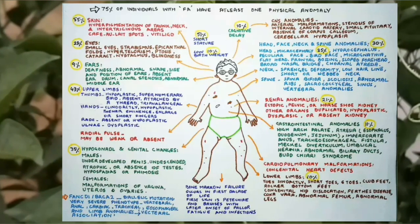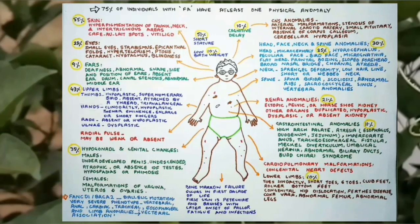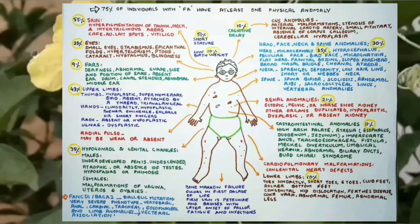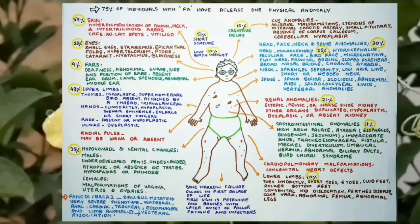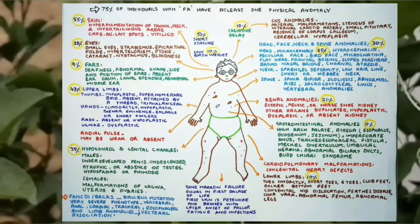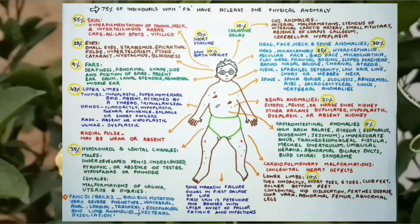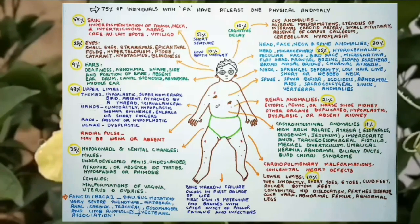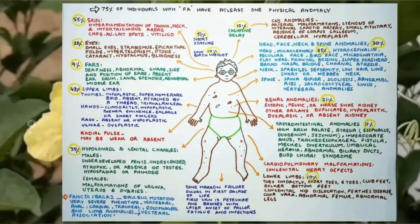Eye anomalies are present in 23% of cases, including small eyes, strabismus, epicanthal folds and hypertelorism. Ear anomalies are present in 9% of cases and include deafness, abnormal shape and size of ears, atresia, dysplasia and low set ears. Gastrointestinal and cardiovascular malformations are present in 11% of cases, including high arched palate, atresia of esophagus, duodenum and jejunum, imperforate anus, tracheoesophageal fistula and congenital heart diseases. CNS anomalies include arterial malformation, small pituitary gland or cerebellar hypoplasia.